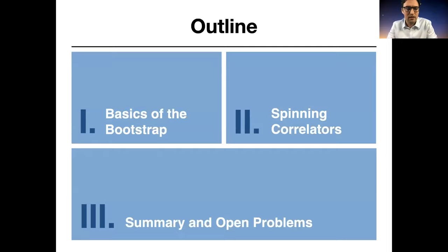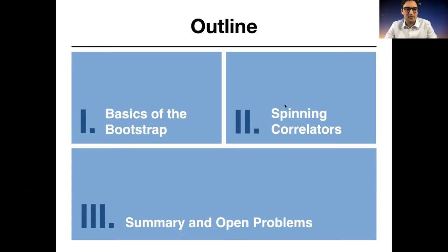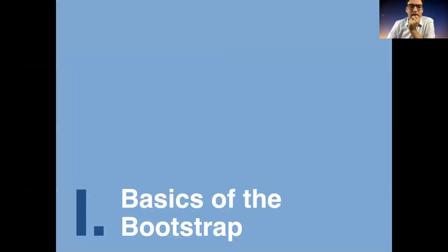The outline of my talk is: first, I'll give the basic idea of this bootstrap method. Then I'll describe more recent work extending this bootstrap to spinning particles. The first part is about scalar correlators, and I'll tell you about new features that arise when particles have spin — especially massless particles with spin — and then I have a few words about open problems.